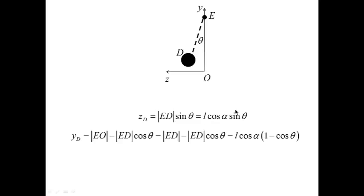For y-d, I calculate it as EO minus ed cos theta minus this distance, ed cos theta. Next, I observe that ed and EO are equal to each other, because d is obtained upon rotating of the weight from the position O. That's why I can replace EO with ed, and then ed is equal to L cos alpha, and this gives me the expression for yd, and therefore, the vector OD could be written in this form.